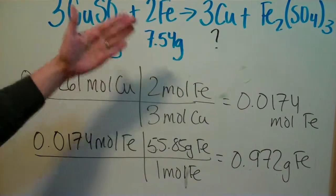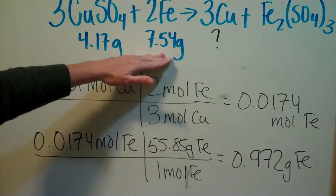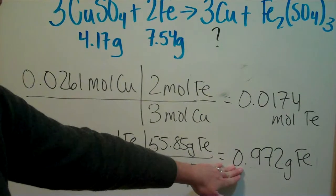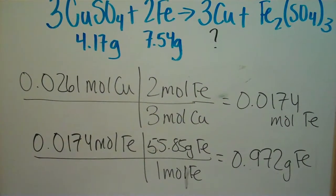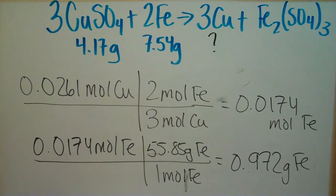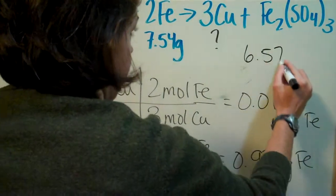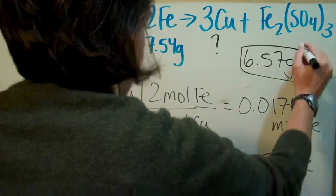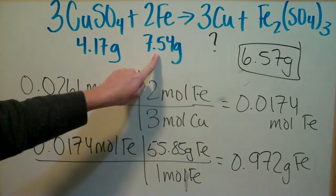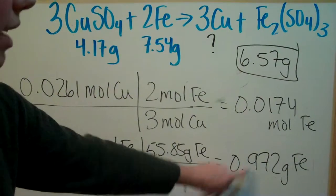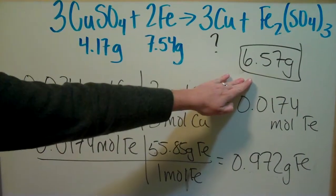So to determine the excess, all you're going to do is take 7.54, subtract 0.972 grams, and that will tell you how much extra you have. And when you do the math, it's 6.57 grams. So when you take this number, which is how many grams you have, minus this number, which is how many grams you need, you're going to get the grams of excess.